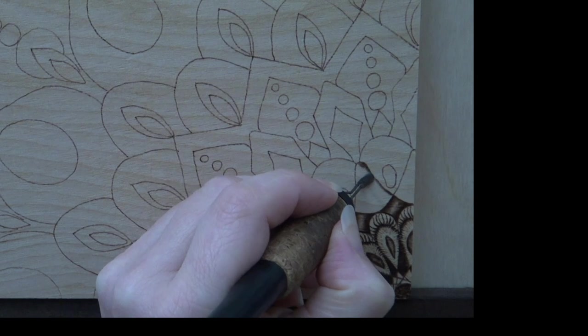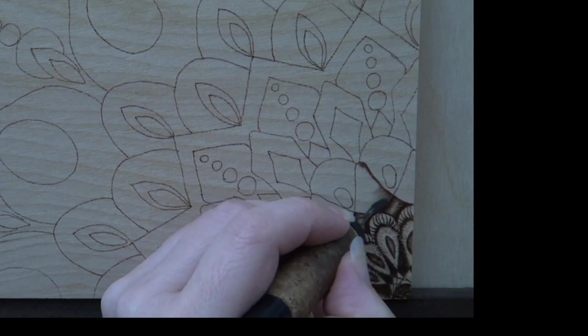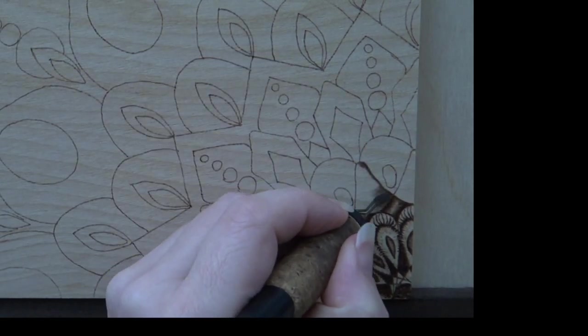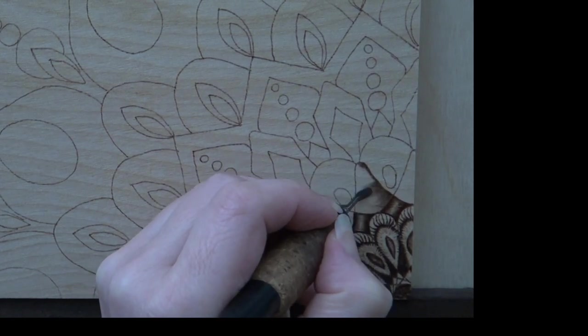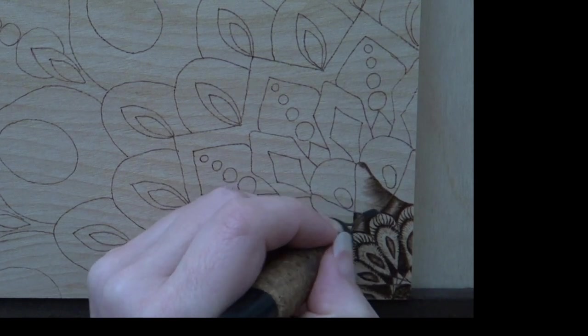To create the cones, burn pull-away strokes along the right edge. As you burn the strokes, vary where the stroke ends, or put another way, vary the length of the strokes. Some strokes I burned very short and others almost reach the opposite edge.